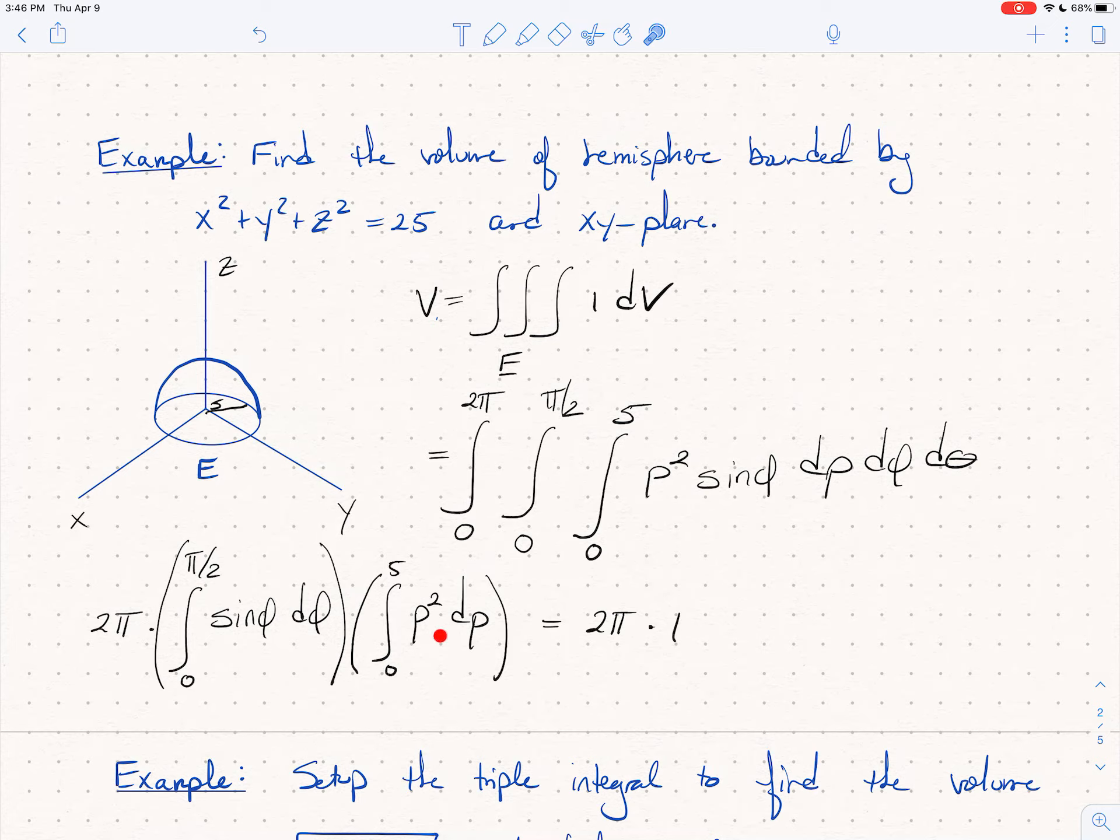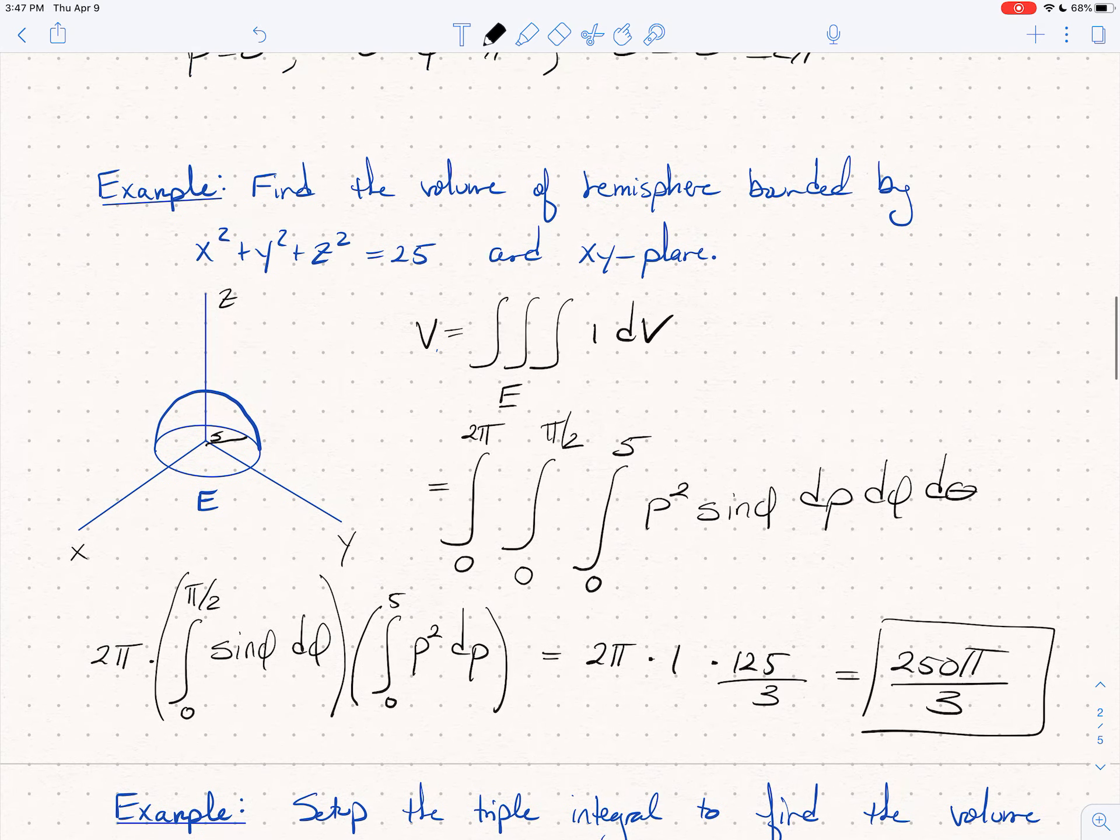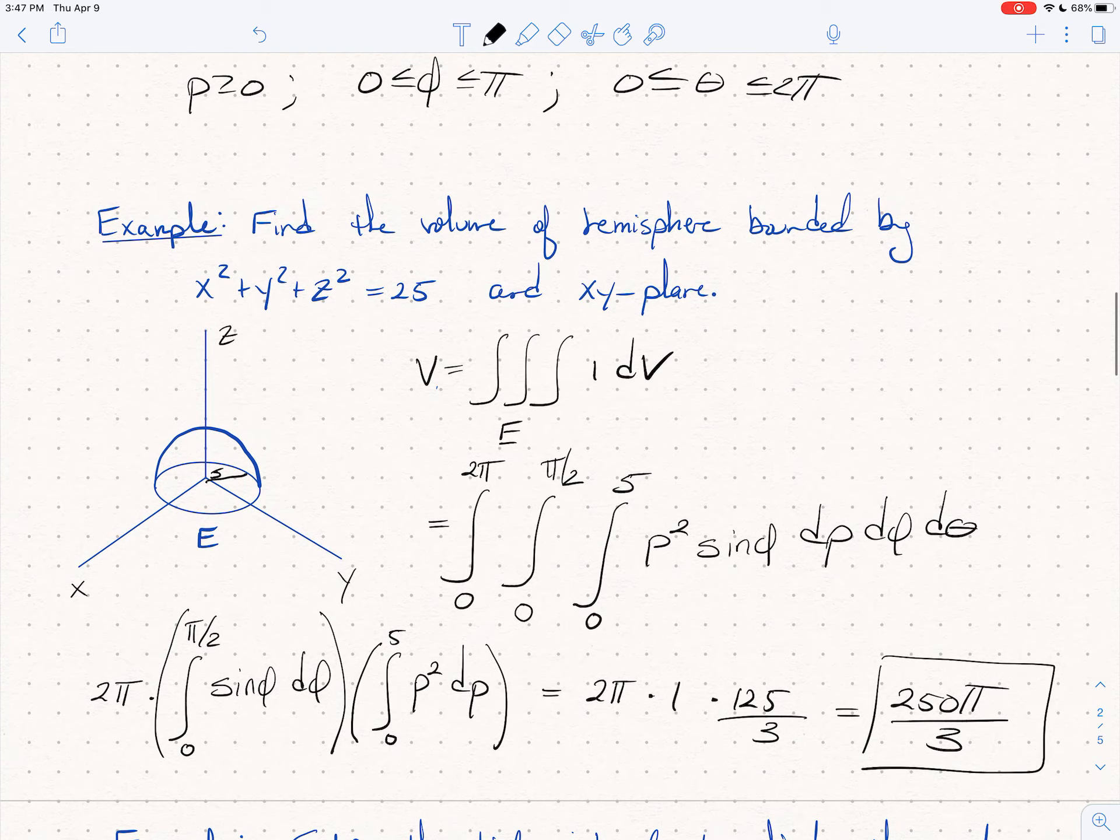And then I'm going to get rho cubed over 3. Plug in 5. So I'm going to get 125 over 3. And so this becomes 250 pi over 3. That's the precise volume of that hemisphere.